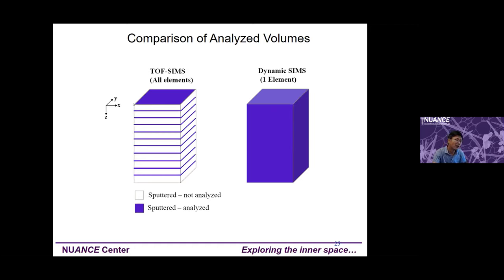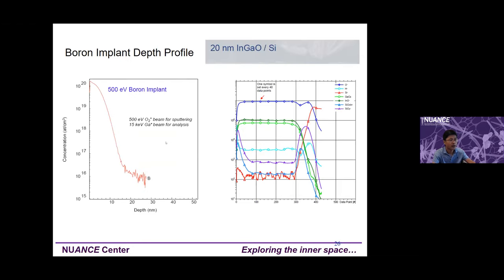Here is a depth profile example of boron implanted in silicon. You can see the boron concentration from the surface down to about 25 nanometers, showing how the concentration changes with depth.